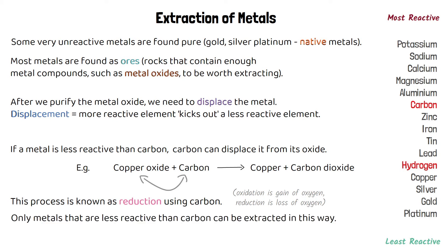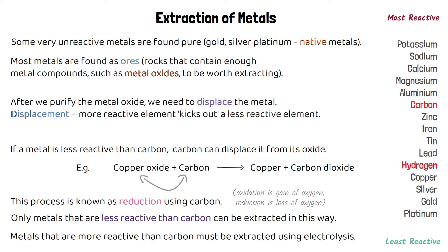This process only works for metals that are less reactive than carbon. Metals that are more reactive than carbon can't be displaced from the oxide by carbon, so we have to use electrolysis to extract those instead.